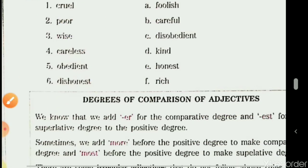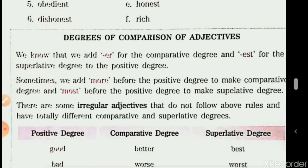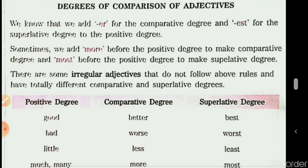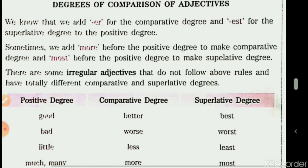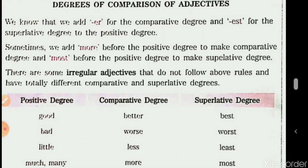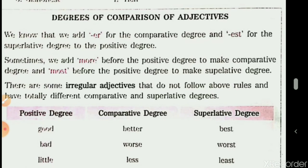Our next exercise is degrees of comparison of adjectives. Adjectives are describing words, and there are three degrees of comparison: the positive degree, the comparative degree, and the superlative degree. We have also learned these in Class 3 and 4, but now we will revise them again.